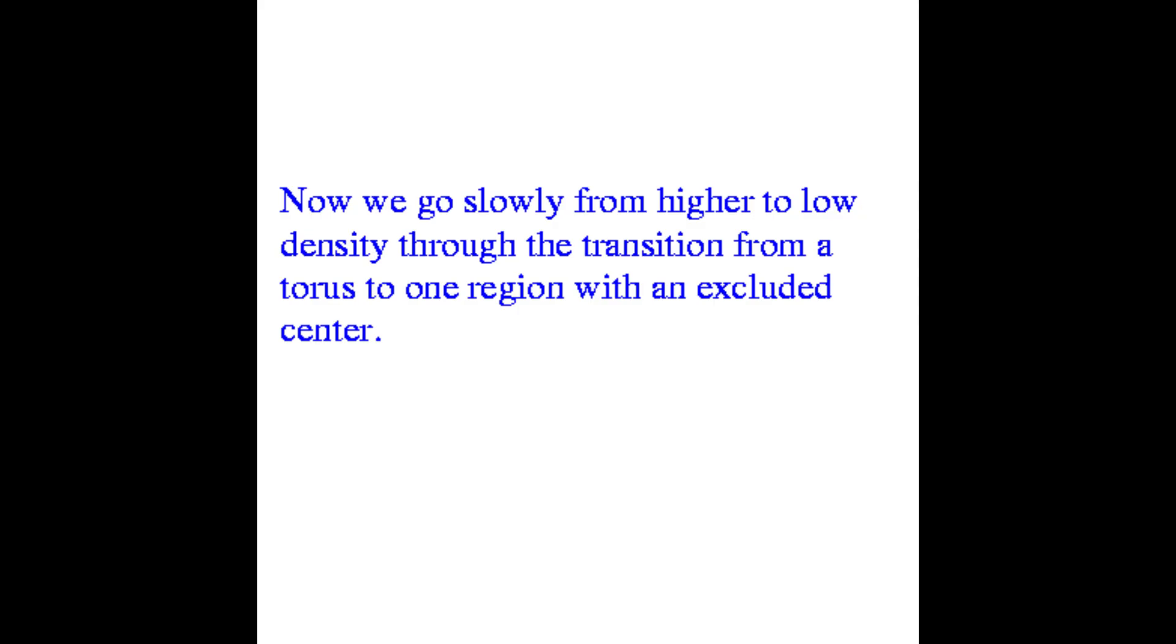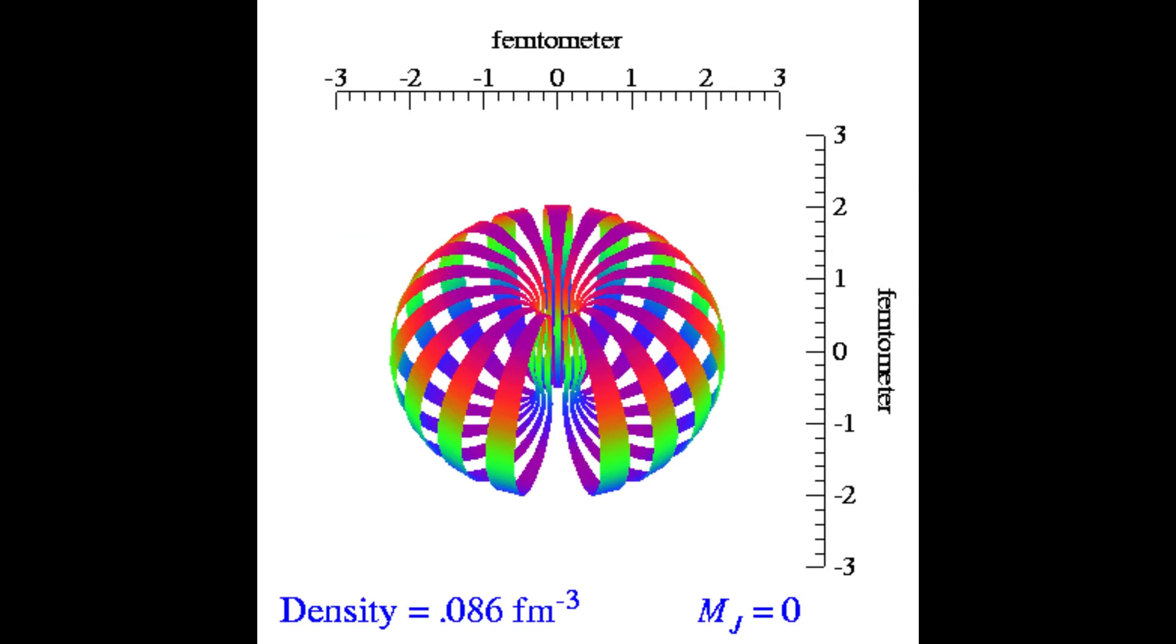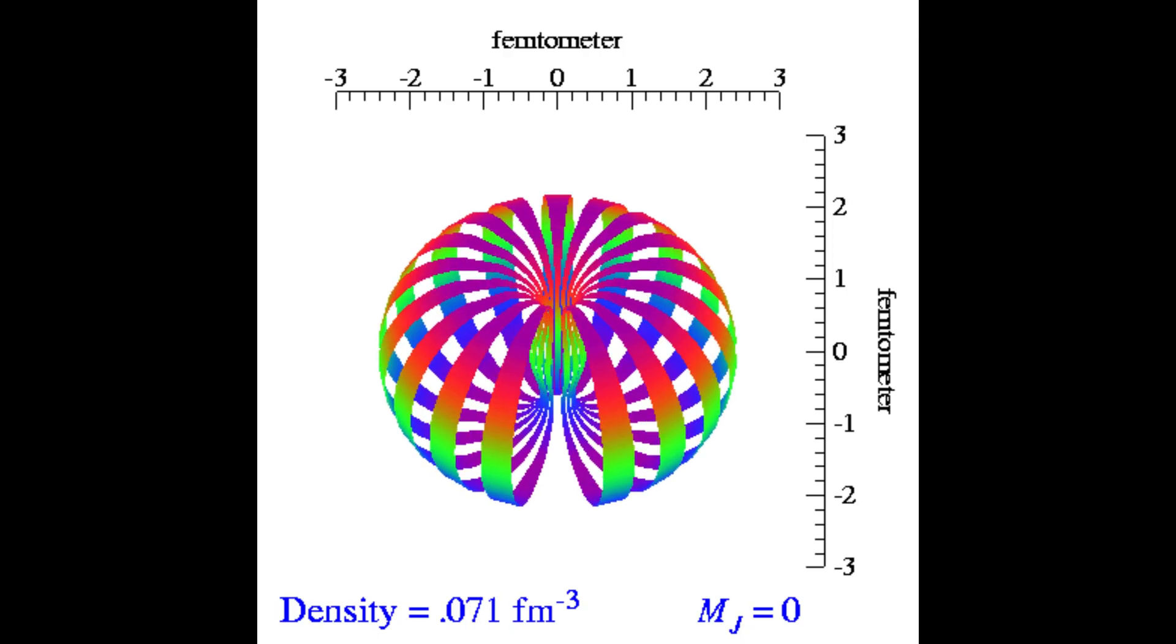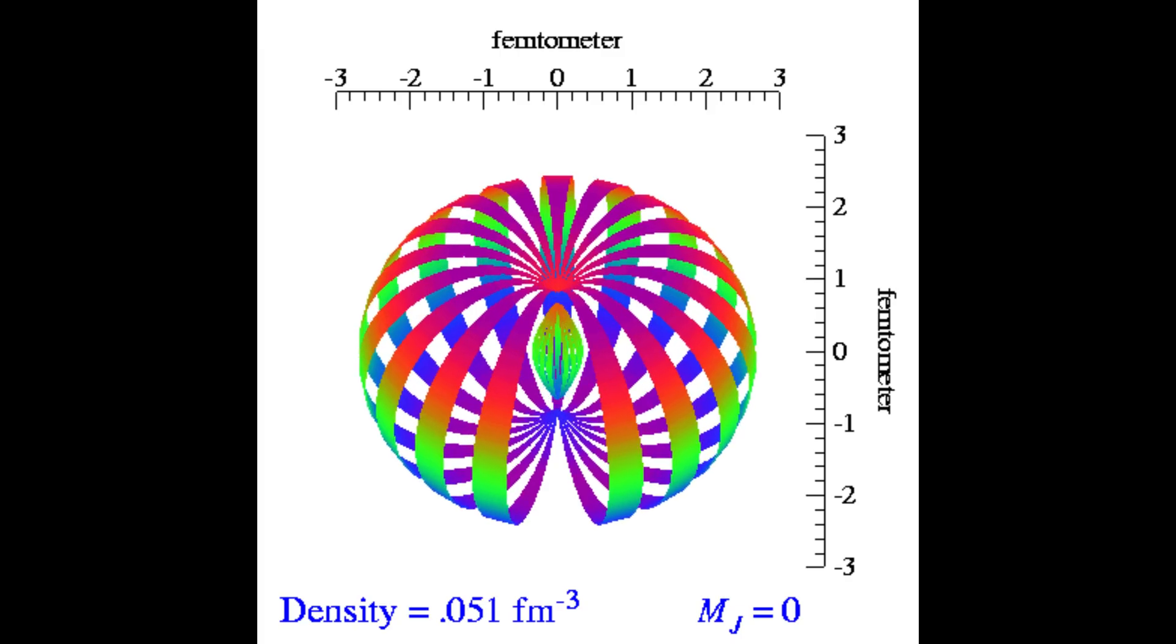Now again, let's go from high density to low density. And you can see we're going to start with this torus. And as it expands out to lower and lower densities, you can see it pinches off. And again, there's going to be a hollow portion inside the nucleus itself.